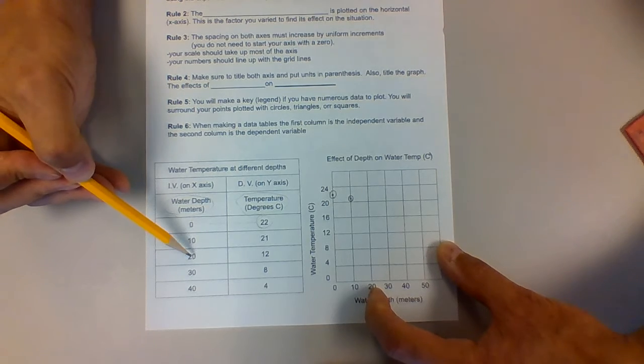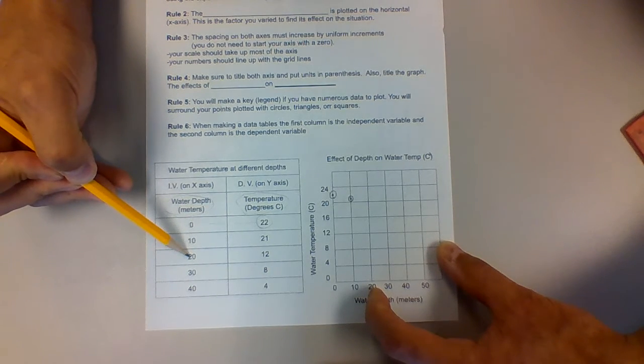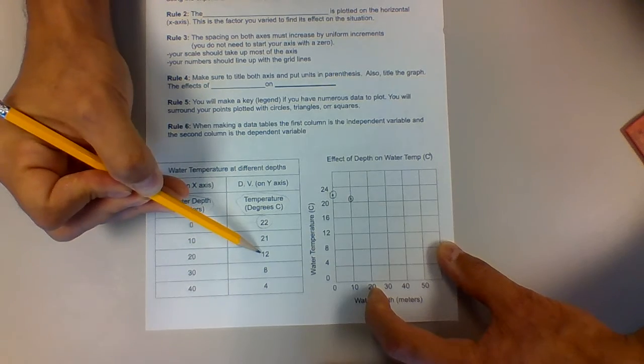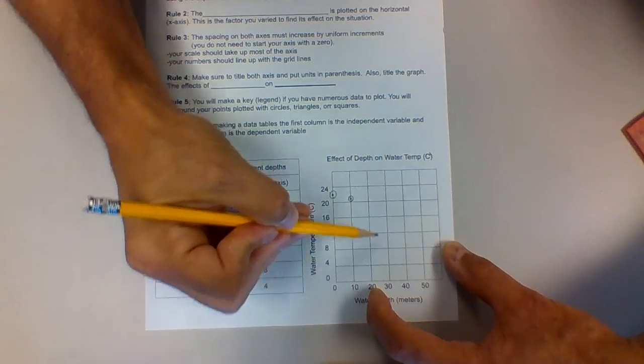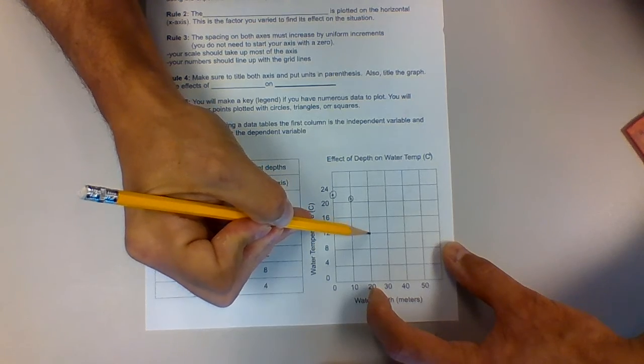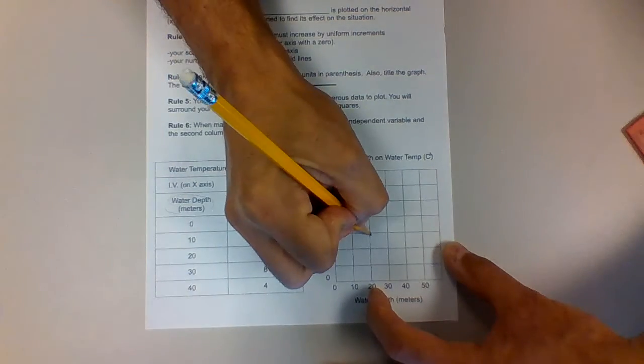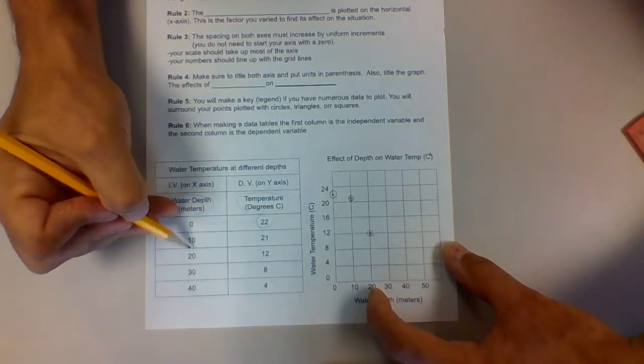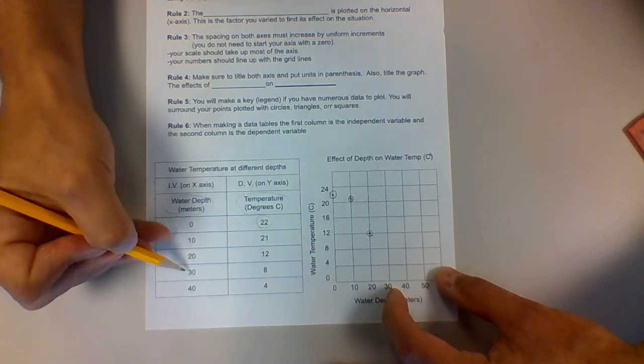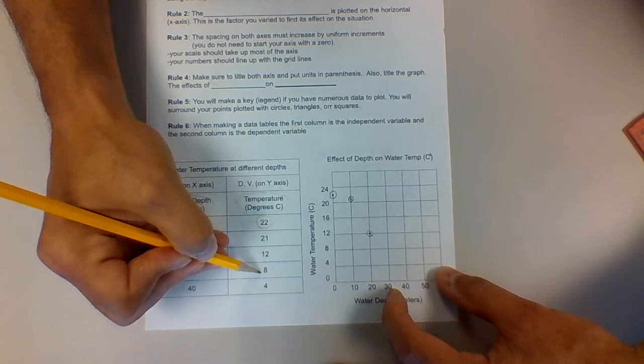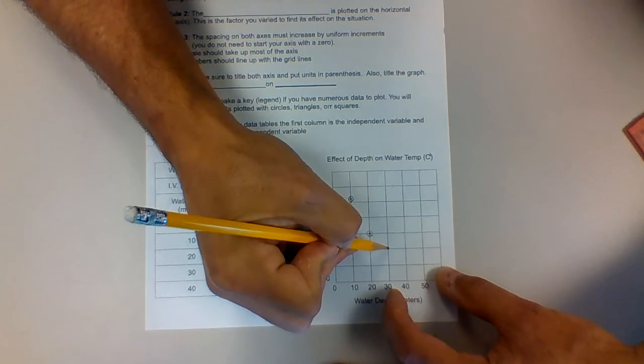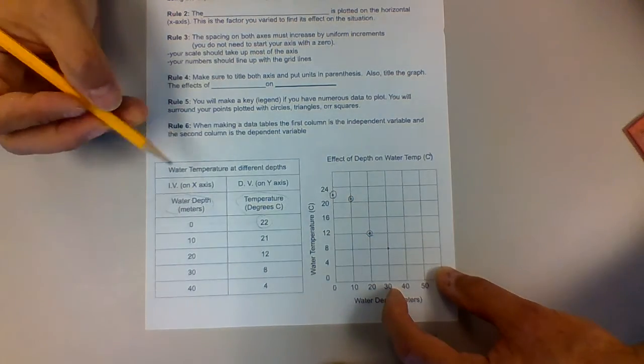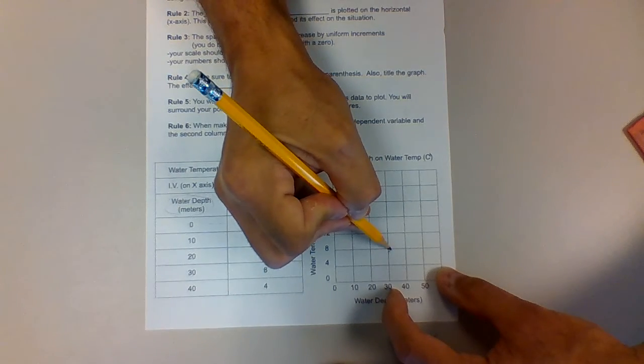Now we go to 30 meters, and that has a corresponding temperature of 8 degrees. It's very nice that these values are happening to land right on our lines. But remember, if we had a depth of 25 meters, we wouldn't have to put 25 on a line. We would just put our data point halfway between.